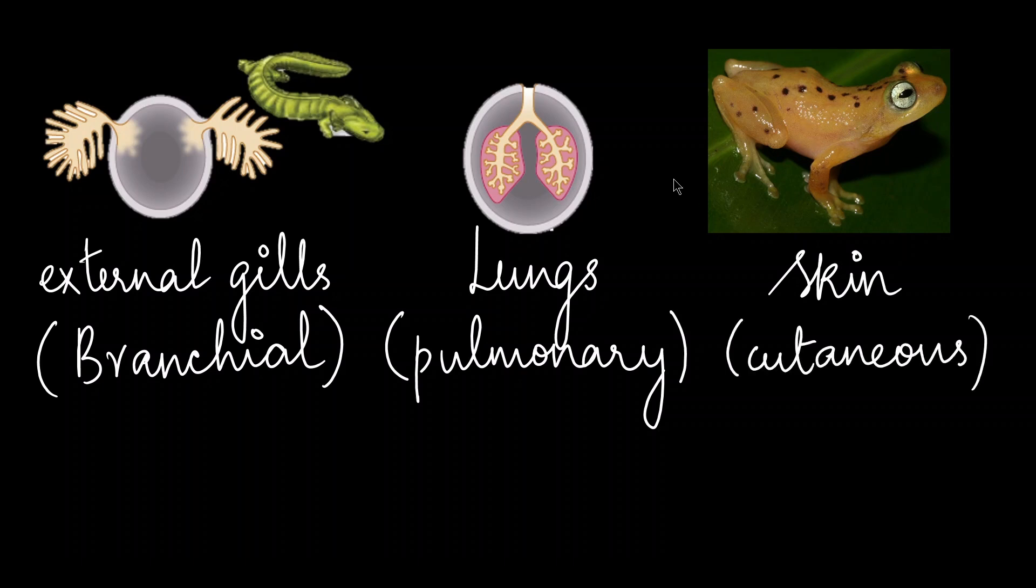Finally, amphibians are also able to exchange gas through their skin. So they are capable of cutaneous respiration. All these respiratory organs are highly vascularized, meaning they have a lot of tiny capillaries in close contact with the medium that they are exposed to. So it could be air or water and that is why they are able to exchange oxygen and carbon dioxide.